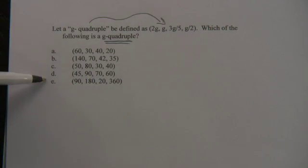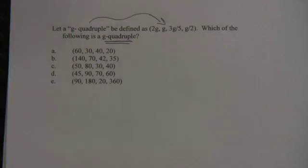You need to find an answer choice that fits this pattern. So I noticed that you have 2G and then you have G. You need an answer choice where the first number is twice as big as the second number.